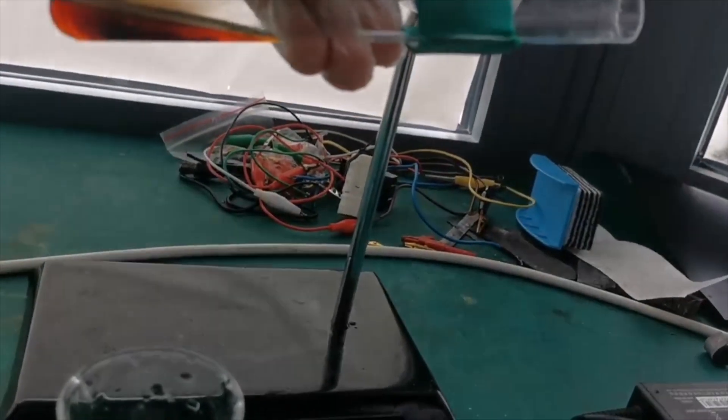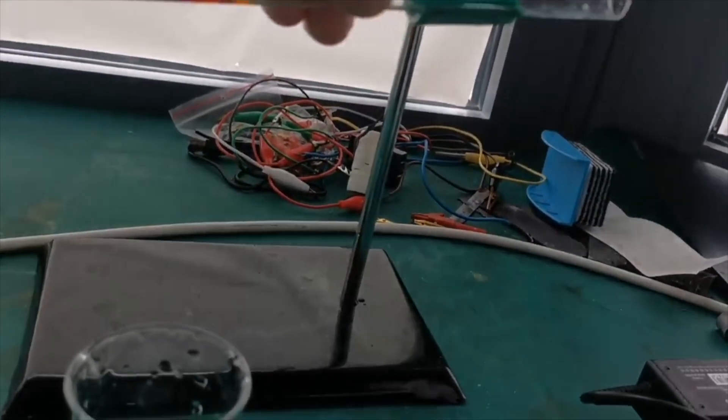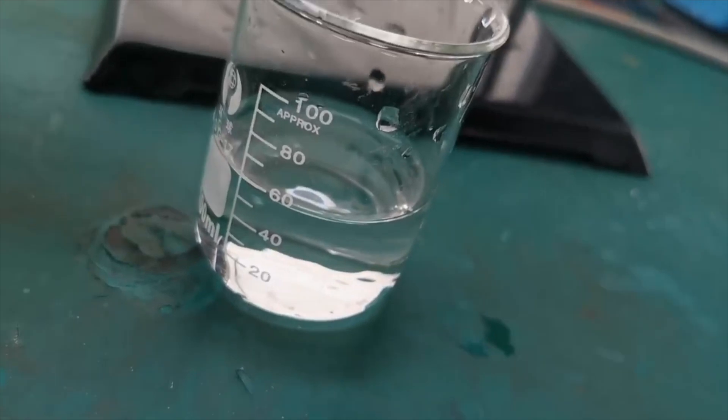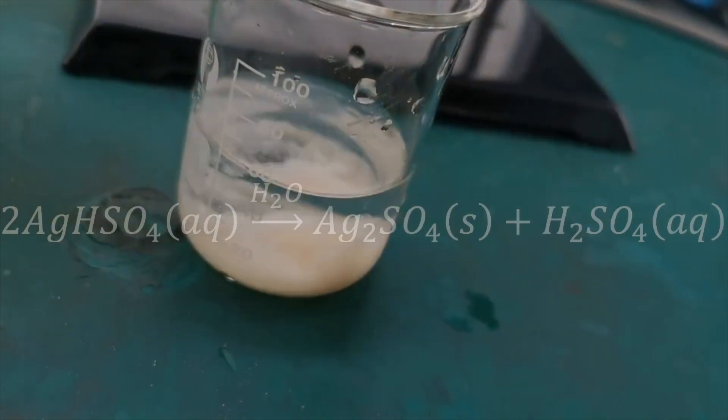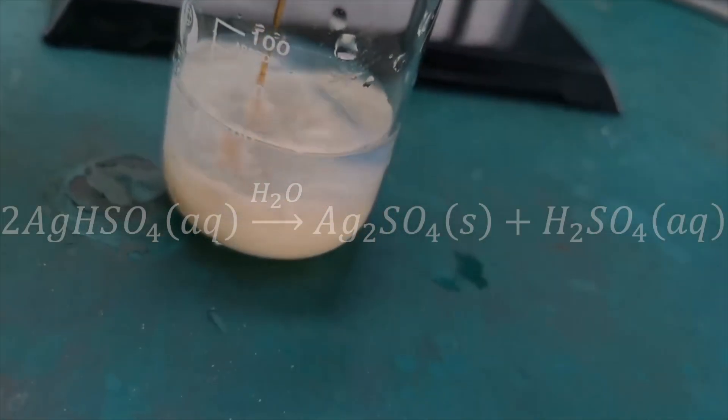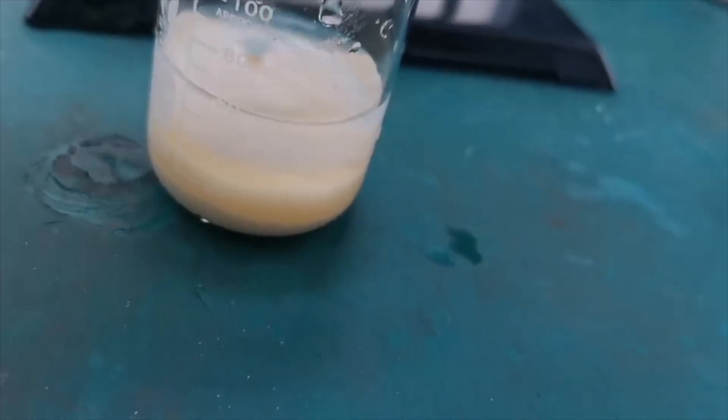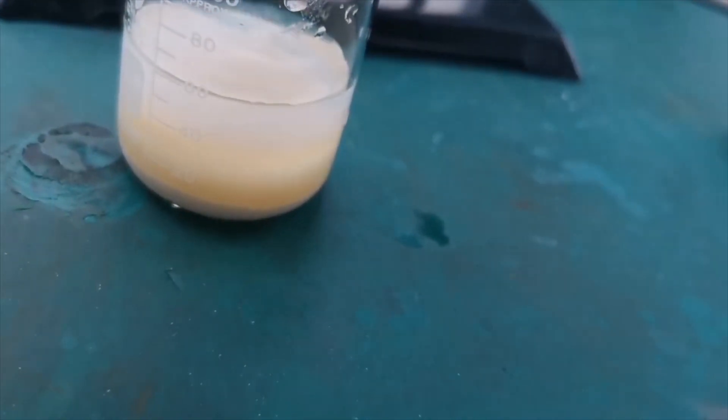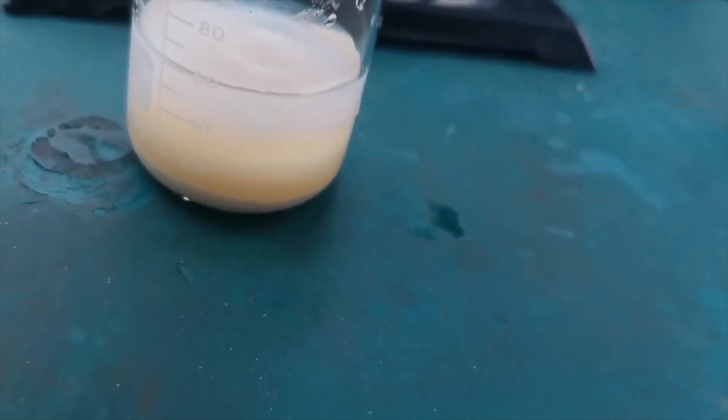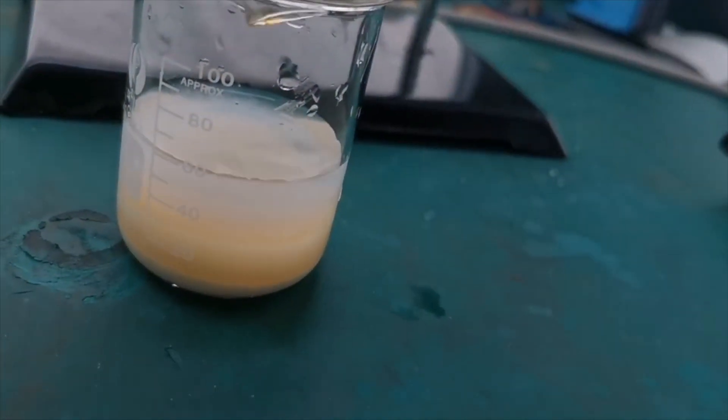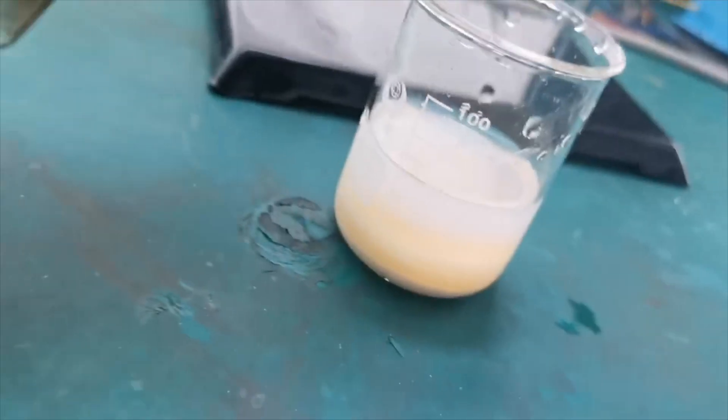After the sulfuric acid cooled for a bit, I took the test tube off the stand and poured its contents into about 60 milliliters of cold water. A milky white precipitate immediately crashes out. This is hopefully our silver sulfate, which is only slightly soluble in water. Be careful during this step as the concentrated sulfuric acid releases a lot of heat when mixed with water. You should never do the reverse and pour the water into the concentrated sulfuric acid.